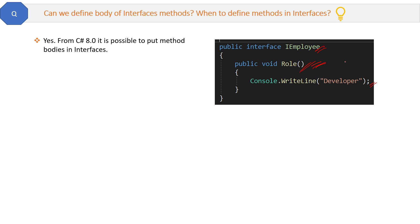Suppose you have a project — an employee management system. Initially you created the IEmployee interface with a role method declaration only. But after one year you realized that the role method should be a concrete method. Now if you convert this interface to an abstract class, a lot of code changes will be required. That's why Microsoft allowed adding a body for interface methods. But remember, when creating a project from scratch, use abstract classes if your methods have bodies.